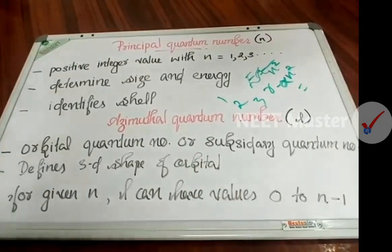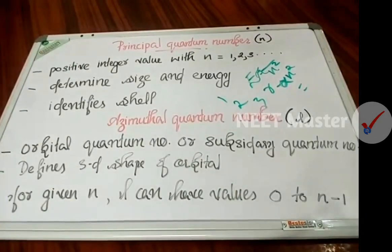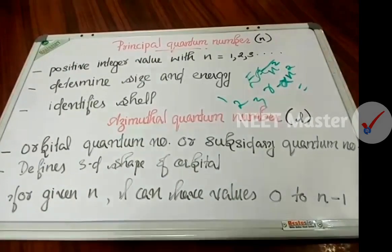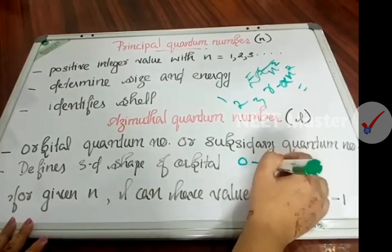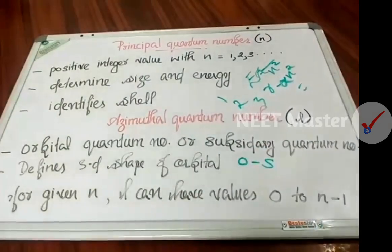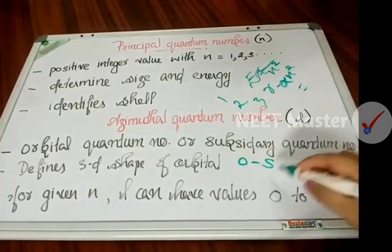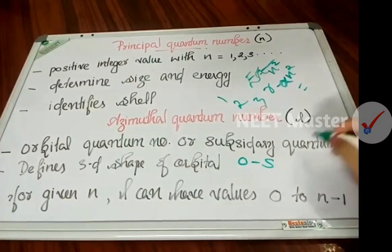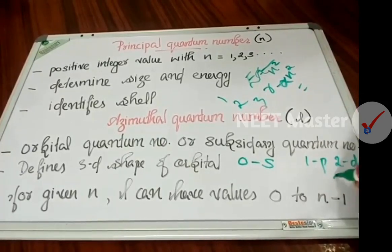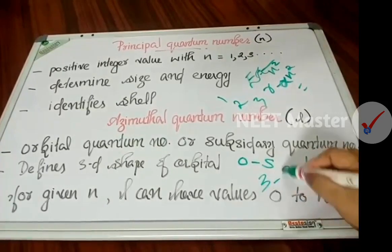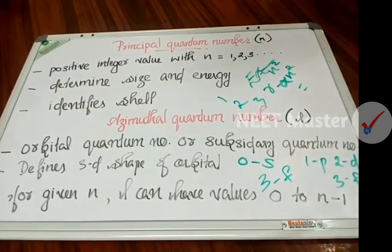This quantum number describes the shape of the orbital. The values of l correspond to orbital types: l = 0 is S (s orbital), 1 is P, 2 is D, and 3 is F.